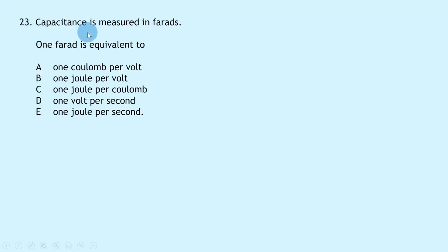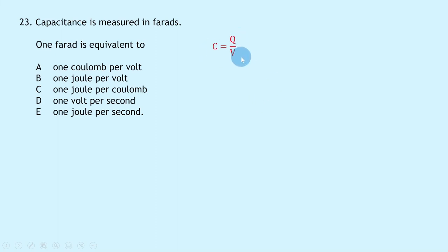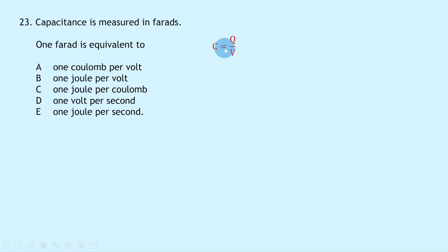Question 23 asks: one farad is equivalent to? Using C = Q/V — capacitance in farads, charge in coulombs, potential difference in volts — one farad equals one coulomb per volt. The answer is A.